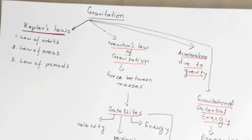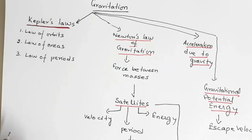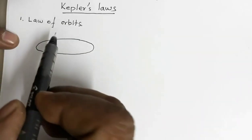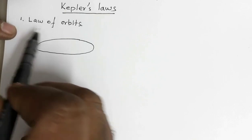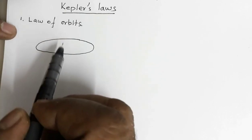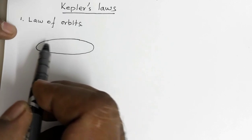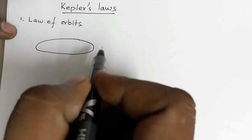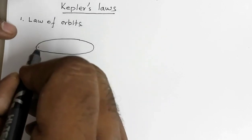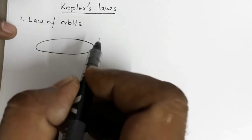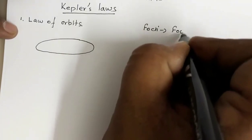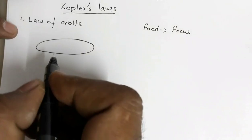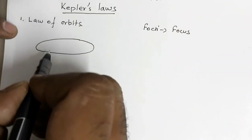We'll start today with Kepler's laws. Before we understand the first law, the law of orbits, we need to understand a few terms. This is an ellipse. A circle has one center, but an ellipse has two foci — foci being the plural form of focus. So it has two foci, and the sun is at one of the foci.